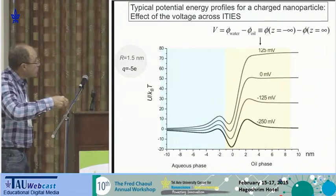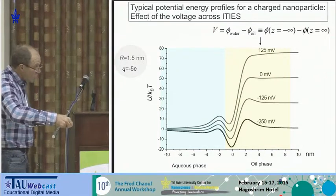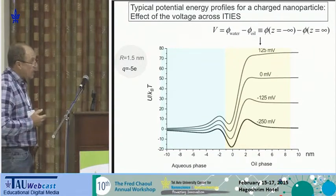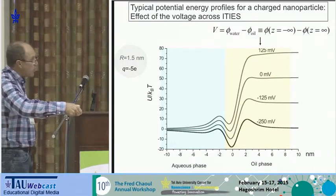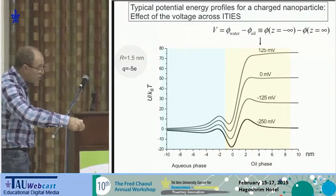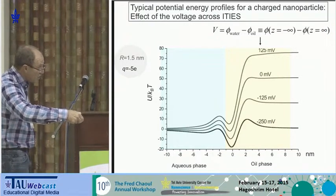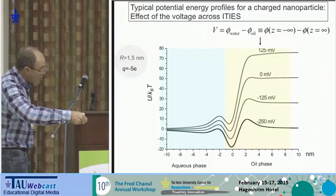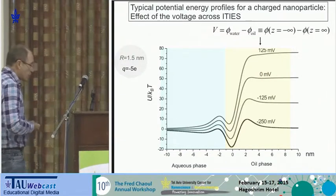These calculations are for nanoparticles of radius 1.5 nanometers, computed for different electric fields across the interface from minus 25 mV to 125 mV. You can see that you can change the depth of this minimum. There is a barrier which prevents desorption of particles back to the water phase, and the position of this minimum near the interface also depends on the electric field.